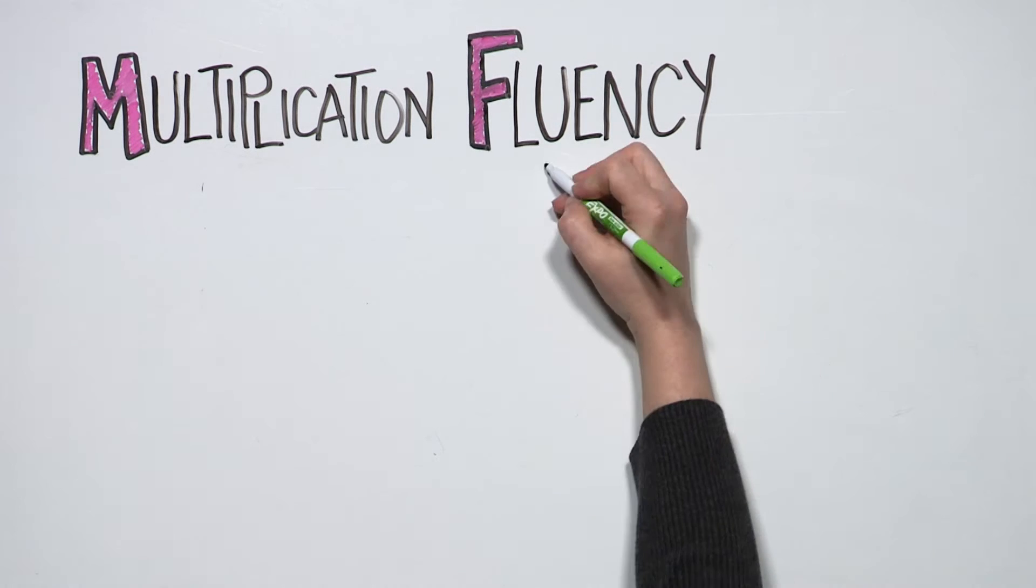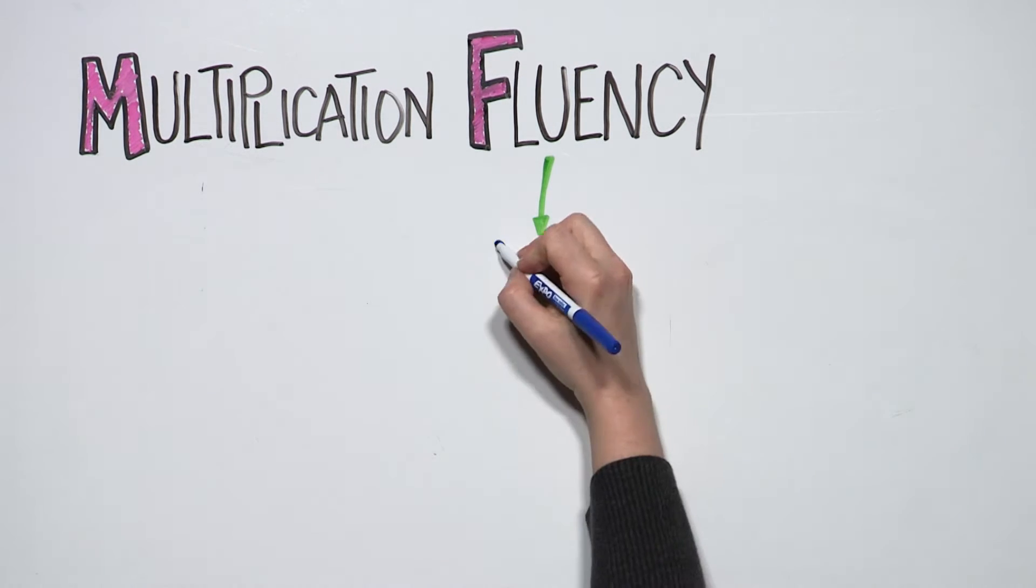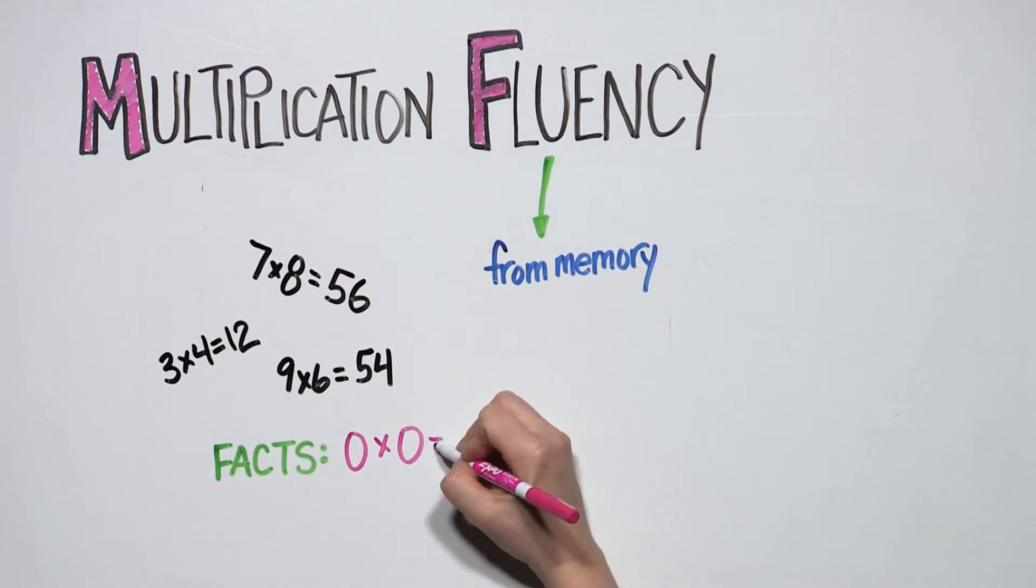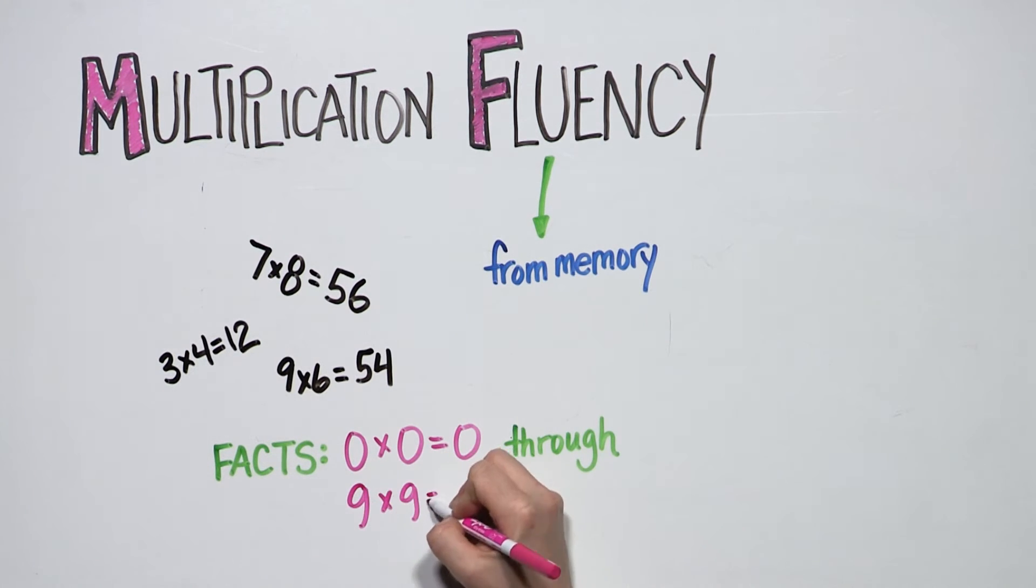Fluency in third grade means knowing from memory all products of two one-digit numbers. This includes facts from 0 times 0 all the way up through 9 times 9.